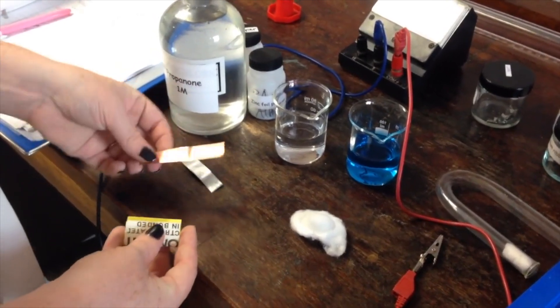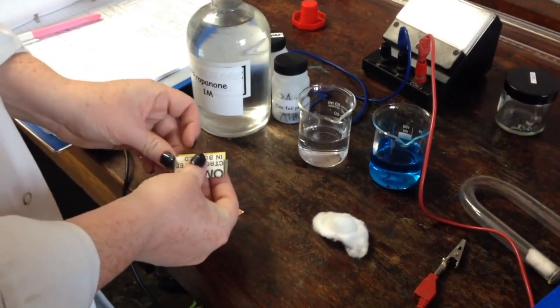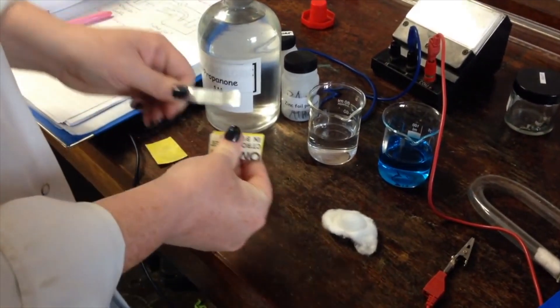So I'm about to set up an electrolysis experiment here. I've got my copper electrode and my zinc electrode, but some of these are a little bit dirty and a bit tarnished.